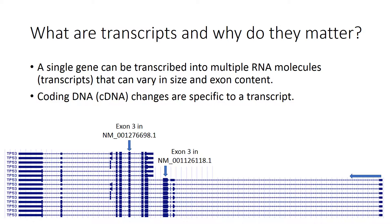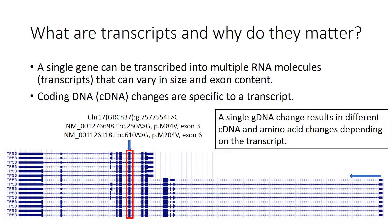The dark blue boxes represent exons that are included in the transcript, and you can see that there is variability in exon content between transcripts. This impacts how exons are numbered. For example, exon 3 in transcript NM_001276698.1 at the top is not the same stretch of DNA as exon 3 in transcript NM_001126118.1. Furthermore, a single genomic DNA change would cause different coding DNA and amino acid changes in different transcripts.